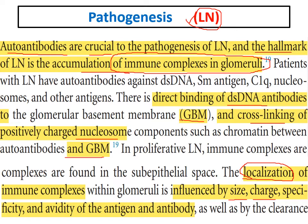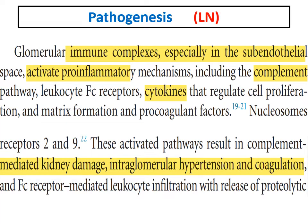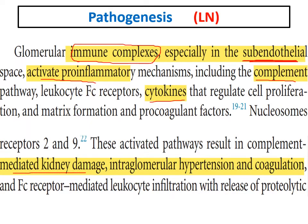Immune complexes deposited in the sub-endothelial space cause a nephritic presentation, mainly occurring in class 3 and class 4 lupus nephritis. They activate pro-inflammatory cytokines and the complement pathway, leading to kidney damage, intra-glomerular hypertension, and coagulation — causing severe nephritic presentations.